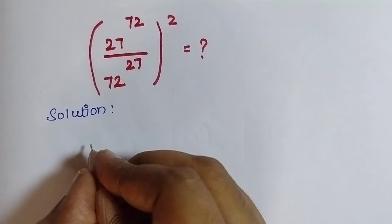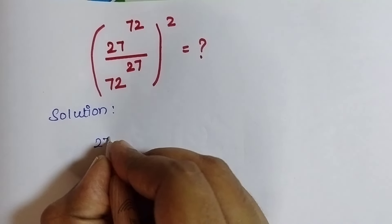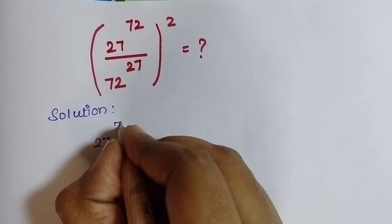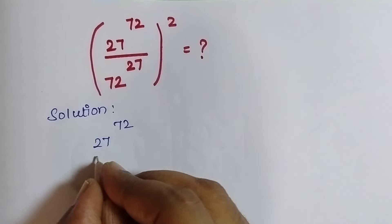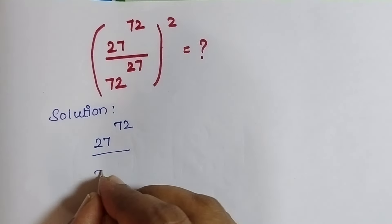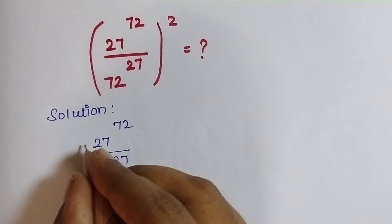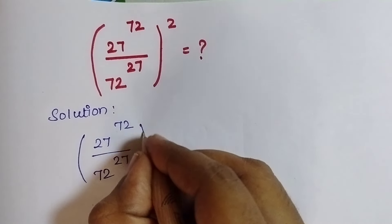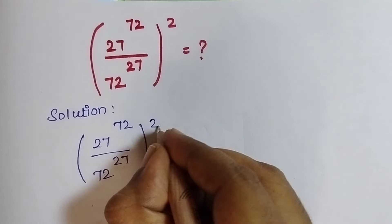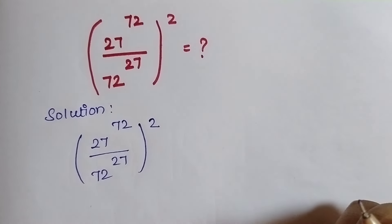First, I am going to write this question here: 27 to the power of 72, divided by 72 to the power of 27, the whole squared. This is the question they have given.